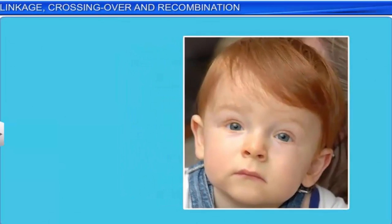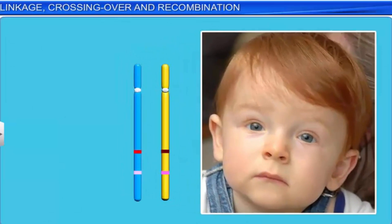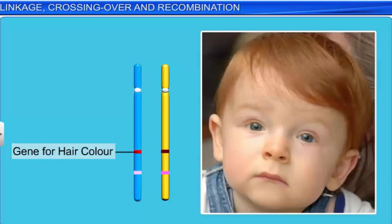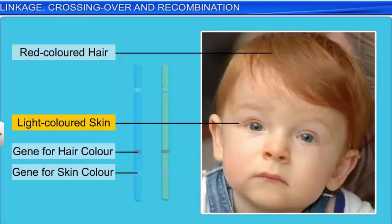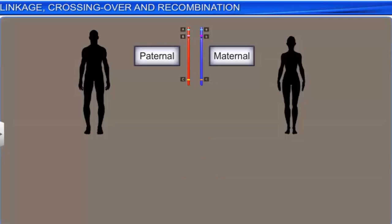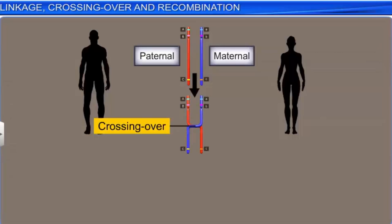For example, it is linked genes that account for a phenomenon like red hair being strongly associated with light-colored skin in human beings. If an individual inherits one of these traits, he or she is most likely to inherit the other trait too. This phenomenon of linkage can be better understood through a process known as crossing over, which occurs during meiosis.